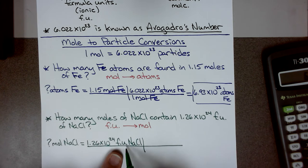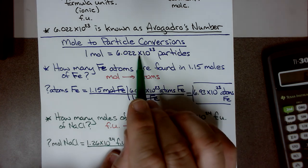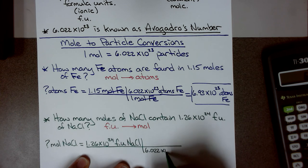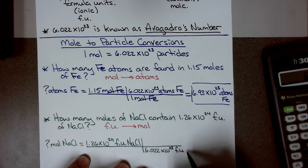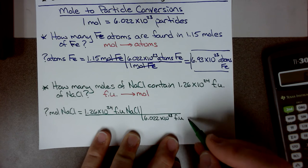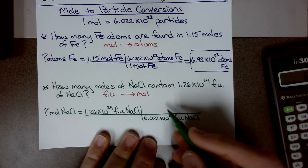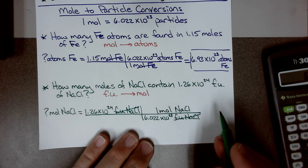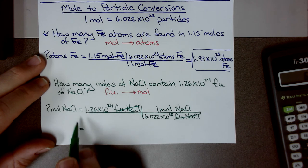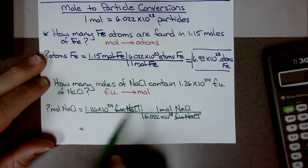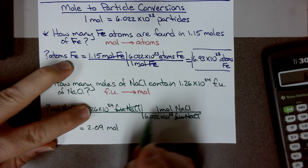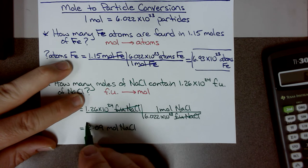I have formula units on top, so I want formula units on bottom. There are 6.022 times 10 to the 23rd formula units of sodium chloride in 1 mole. So I write 6.022 times 10 to the 23rd formula units on the bottom and 1 mole on top. Dividing gives 2.09 moles of sodium chloride.